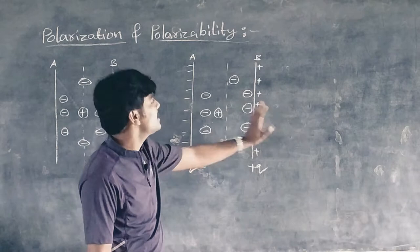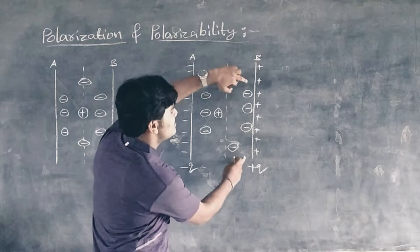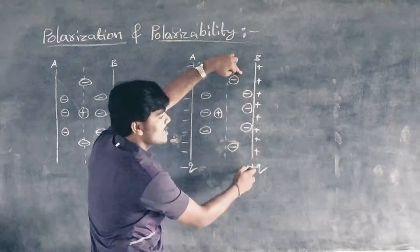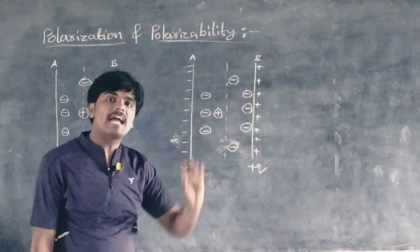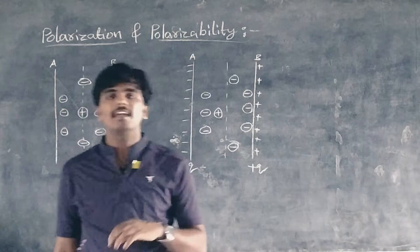The electrons are slightly displaced towards the positively charged metal plate, while the positive nucleus is displaced towards the negatively charged metallic plate. The electronic displacement is a function of the magnitude of the charges on the plates and the nature of the dielectric.